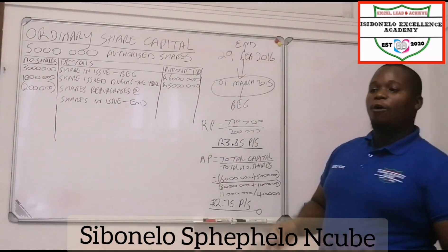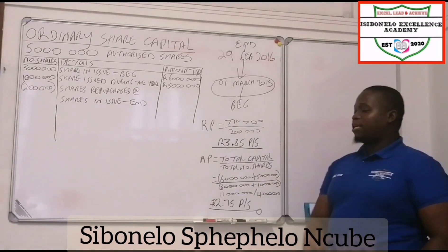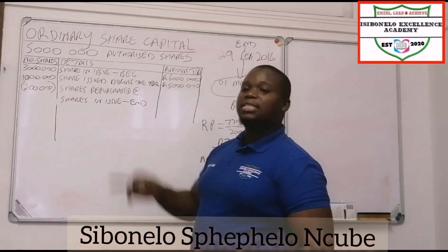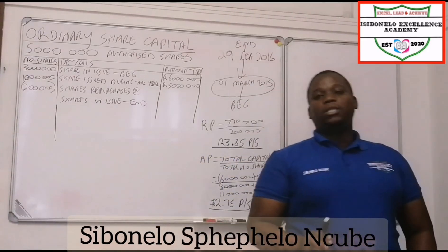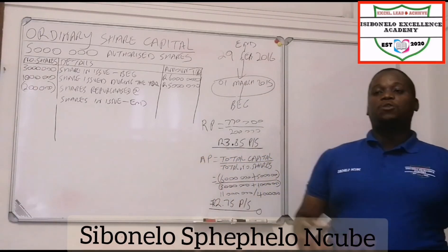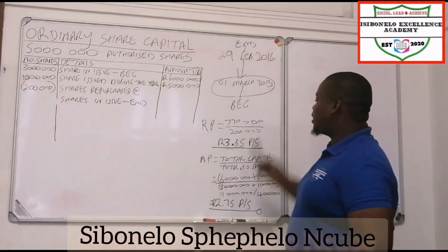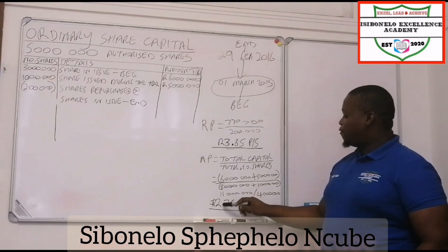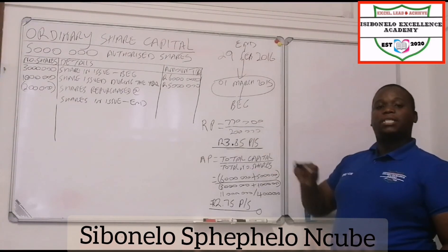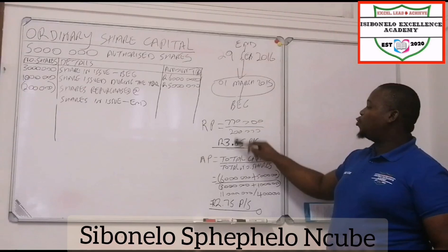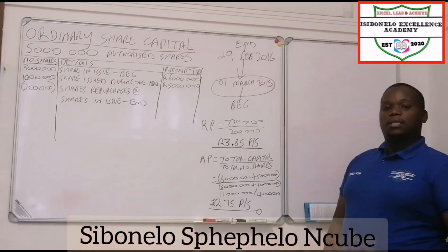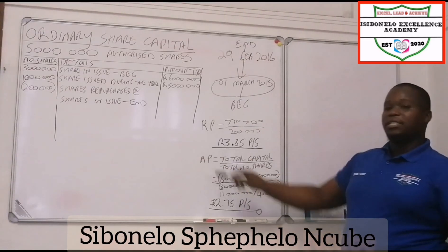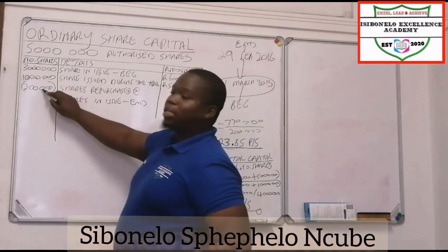The share repurchase is always limited to the lower of the average price and the purchase price — meaning between the two, you take the lowest. The lower between the two is 275 cents, which is the average price. Therefore, the number of shares bought is multiplied by this lowest price.